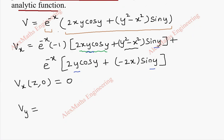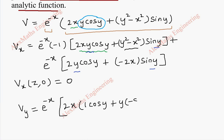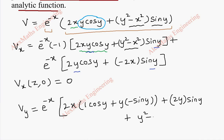Now vy — again we use the product rule but we take the partial derivative with respect to y, so the x term is a constant. We keep the exponential constant as it is and differentiate the remaining terms. 2x is a constant, and for y·cosy we use the product rule: y derivative is 1 and cosy stays, plus y stays and cosy derivative is minus siny, close the bracket. Again we use the product rule: first term derivative is 2y, and y² minus x² is kept as it is with siny derivative giving cosy.